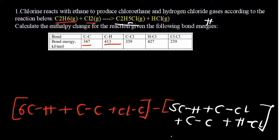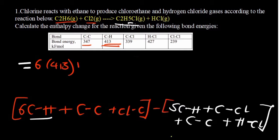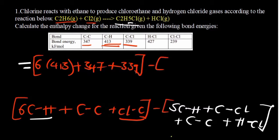Now it's a matter of substituting in the values and computing. Starting with the reactants: carbon to hydrogen is 413 kJ/mol from the table, so it's 6 multiplied by 413. Plus carbon to carbon is 347. Plus chlorine to chlorine — which I'll correct to 239. In brackets, subtract the products. For the products, carbon to hydrogen is still 413, so 5 multiplied by 413. Plus carbon to chlorine which is 339.